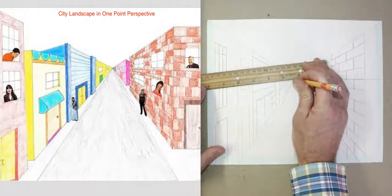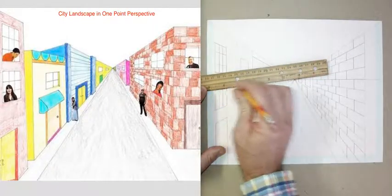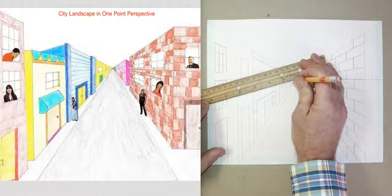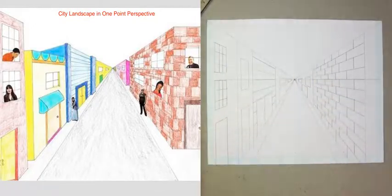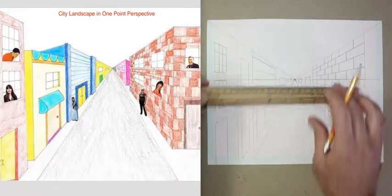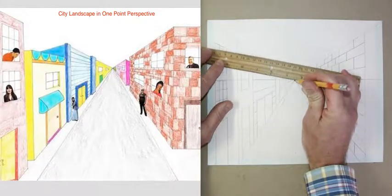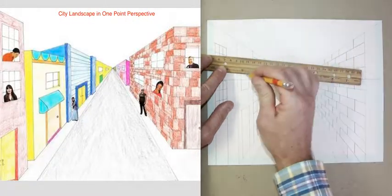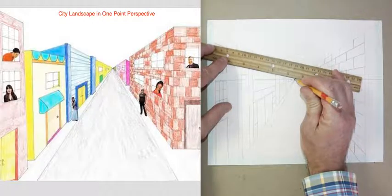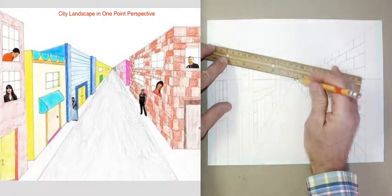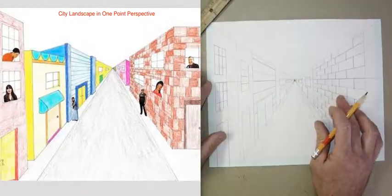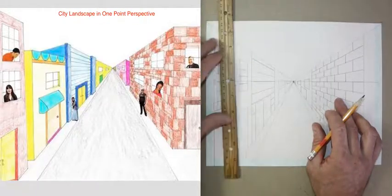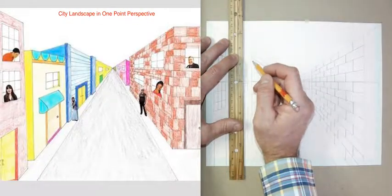I'll divide each window into thirds and continue to rotate to divide the next window into thirds as well. Your thirds don't have to be exactly equal — in reality they should be, but it's very difficult to tell on a drawing like this, so if they're not, that's all right. I'm going to add some panes of glass in this other window as well, dividing it into fourths, and then adding in a vertical line so I have eight panes in that window.